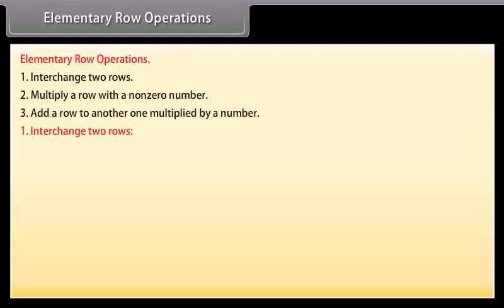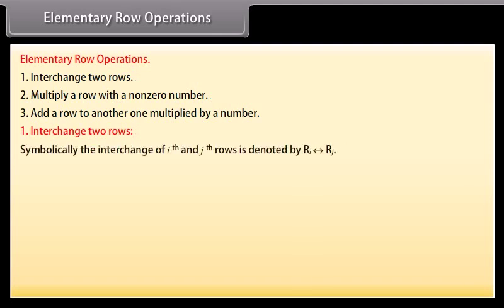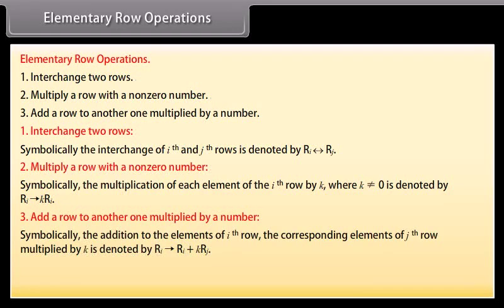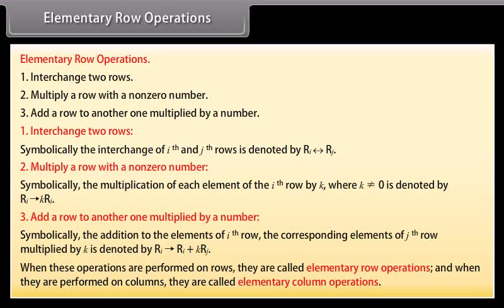Let us go through the elementary row operations one by one. Interchange two rows: symbolically, the interchange of the i-th and j-th rows is denoted as given. Multiply a row with a non-zero number: symbolically, the multiplication of each element of the i-th row by k, where k ≠ 0, is denoted as given. Add a row to another multiplied by a number: the addition to elements of the i-th row of the corresponding elements of the j-th row multiplied by k is denoted as given. When performed on rows, these are called elementary row operations; on columns, elementary column operations.